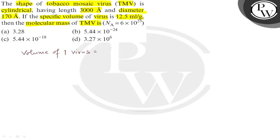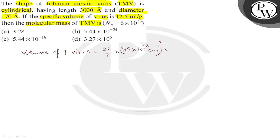It is cylindrical, so its volume should be pi r squared h. That is pi times 85 into 10 raise to minus 8 centimeter squared into h, which is 3000 angstrom. The diameter is 170 angstrom, so the radius is 170 divided by 2, which is 85 angstrom.